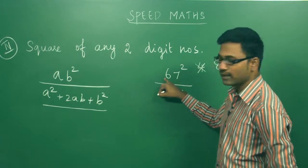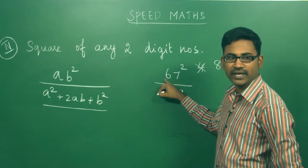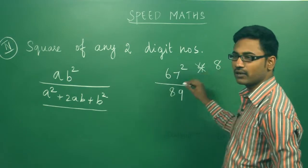The last step: you have to square the other digit. That is 6 squared, 36. 36 plus 8 is 44.